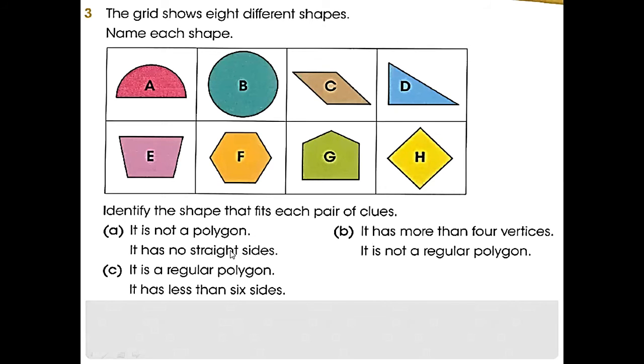Identify the shape that fits each pair of clues. It is not a polygon and has no straight lines. These two are only not polygons, but only B has no straight lines, so only B is the right one.